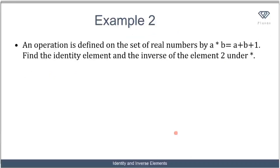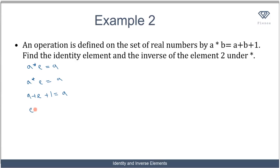Here's another example: an operation is defined on the set of real numbers by a★b equals a plus b plus one. Find the identity element and the inverse of the element 2 under star. First we find the identity element. We know a★e equals a, so replacing b with e: a★e equals a plus e plus one equals a. Making e the subject: e equals a minus a minus one, which gives e equals minus one. So the identity element is minus one.